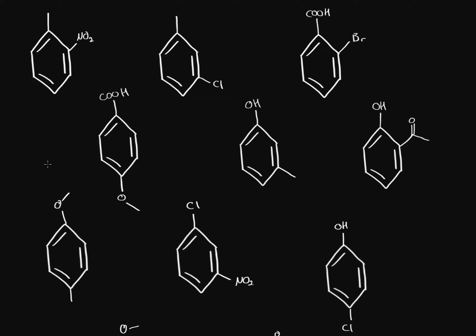The second thing we have to look at is electron-withdrawing groups. Electron-withdrawing groups are meta-directing. For example, with a nitrate group, the meta positions compared to it are this one and this one — basically two carbons down.